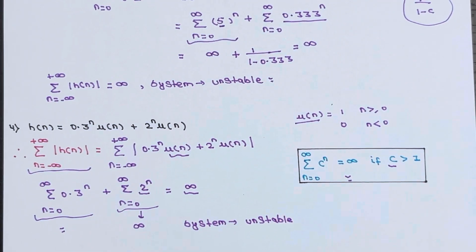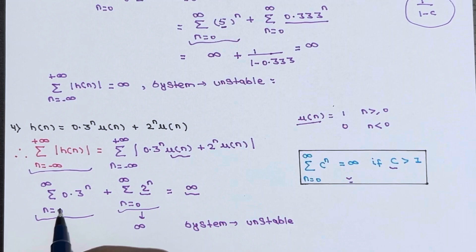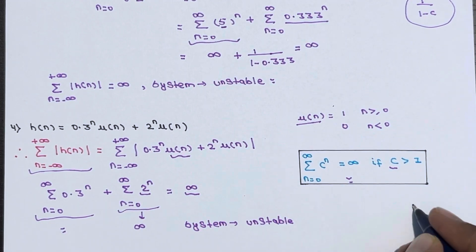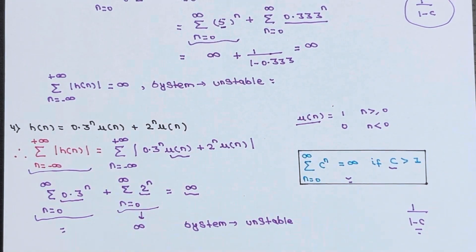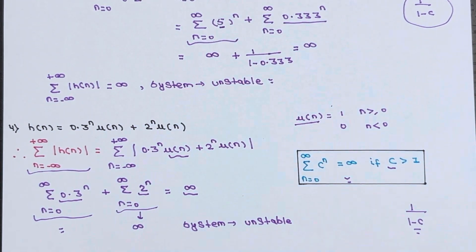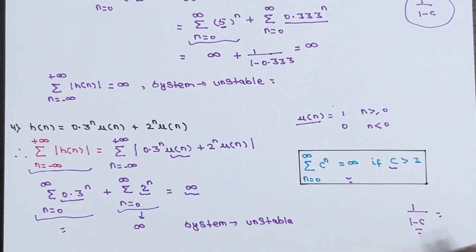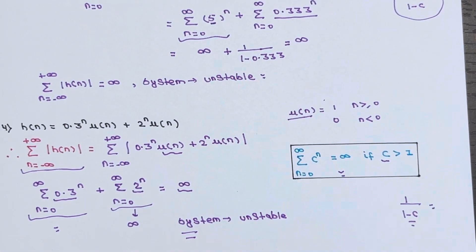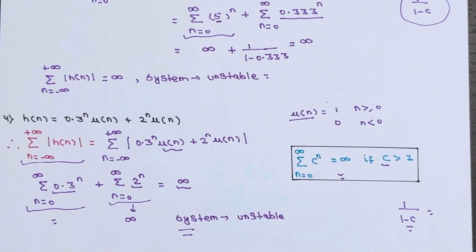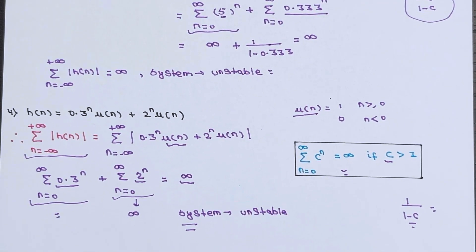If you want to solve the first term, apply the formula 1 divided by (1 minus c), since c equals 0.3 which lies between 0 and 1. But since we already have infinity from the second term, the system is unstable. If you have any doubts about these four numericals, you can ask in the comment section. Thanks for watching.